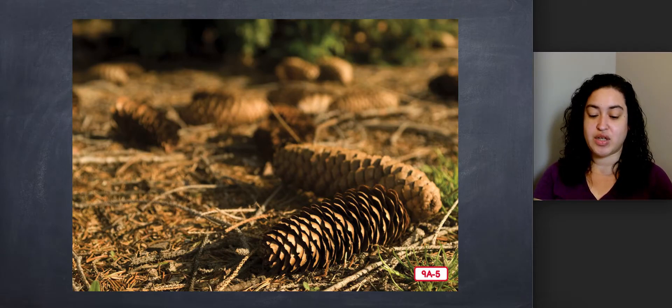Most evergreen trees are called conifers, which is another word for trees that have needle-like leaves and make cones. The cones in this picture are called pine cones. Unlike deciduous trees, which have flowers and fruit, conifer trees do not have flowers and they do not grow fruit. Instead, conifer trees make cones and seeds grow inside their cones.